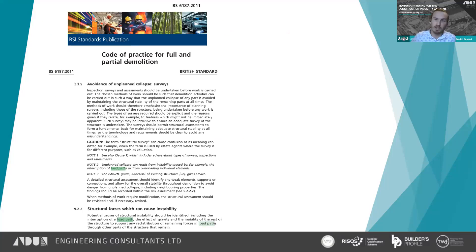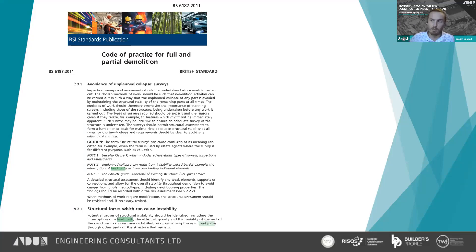We'll first talk about the demolition side and then go on to the construction side. BS6187 - the code of practice for demolition - talks quite a lot about load paths and looks at how they change regularly. You can see references in clauses 5.2 and 9.22 on things that can cause unplanned collapses. It highlights why load paths are really important for temporary works engineers - there is a residual risk that these will be interrupted.